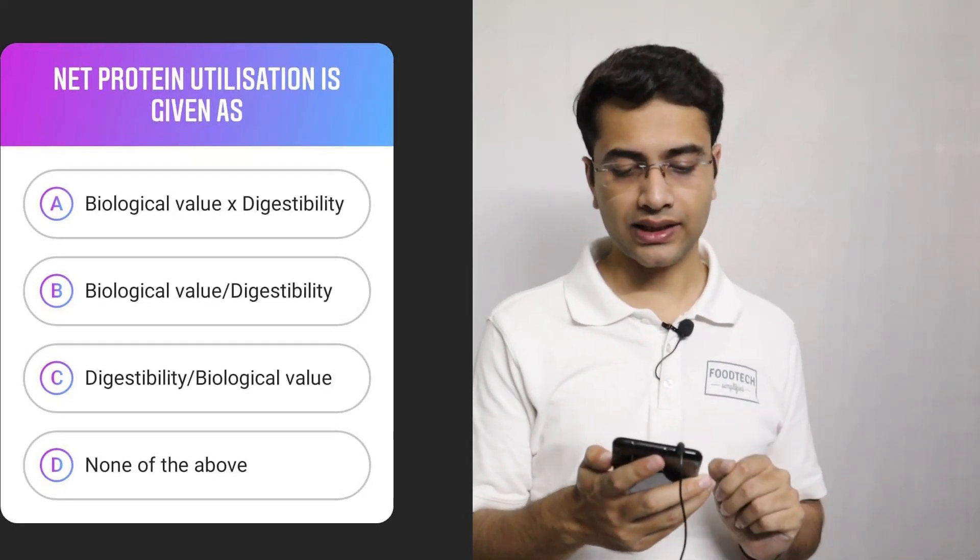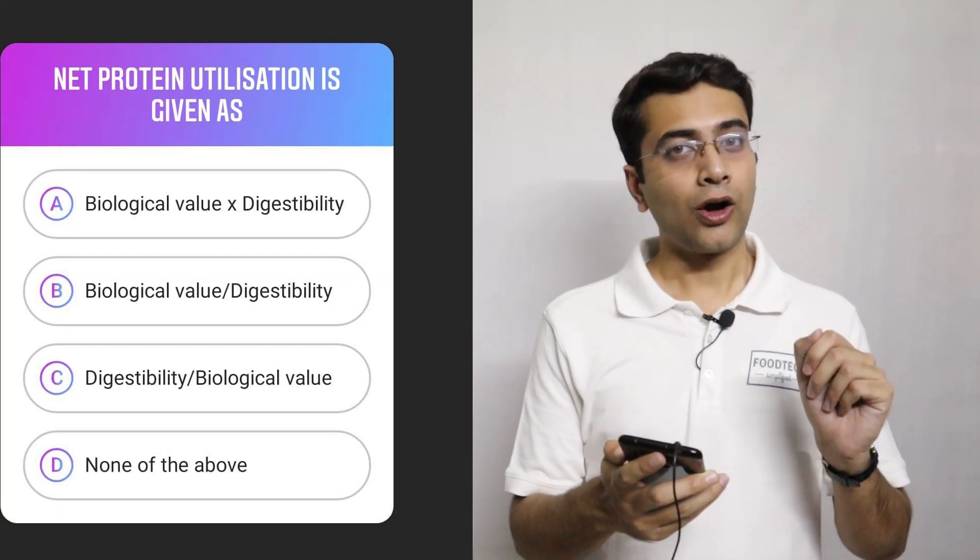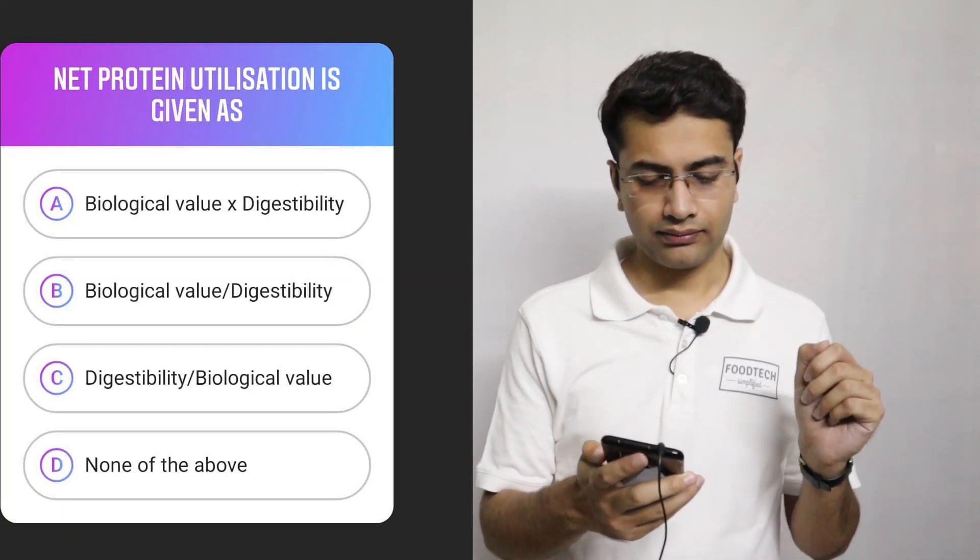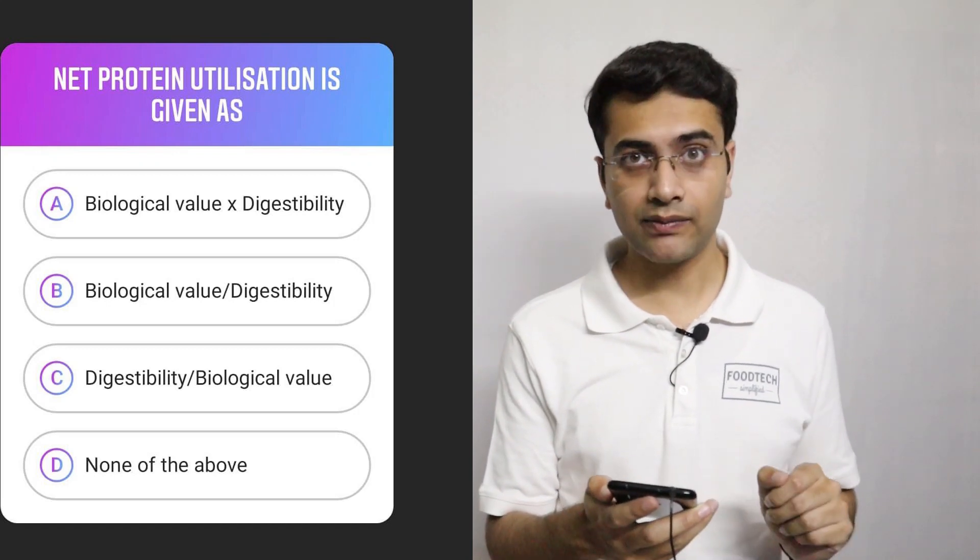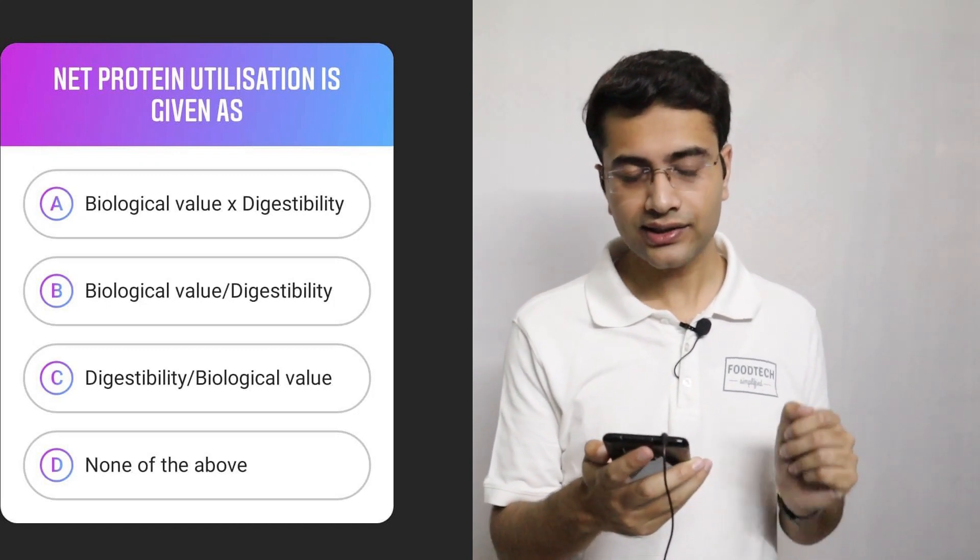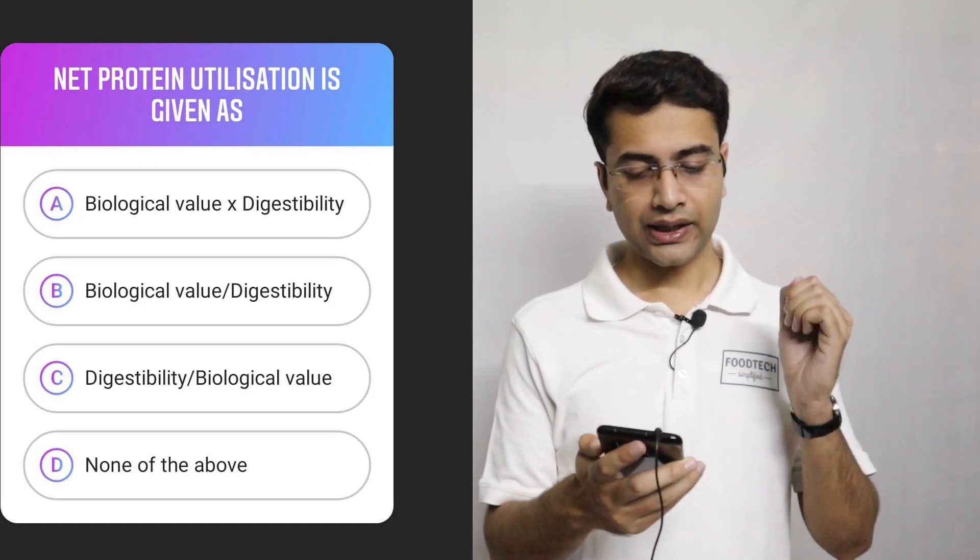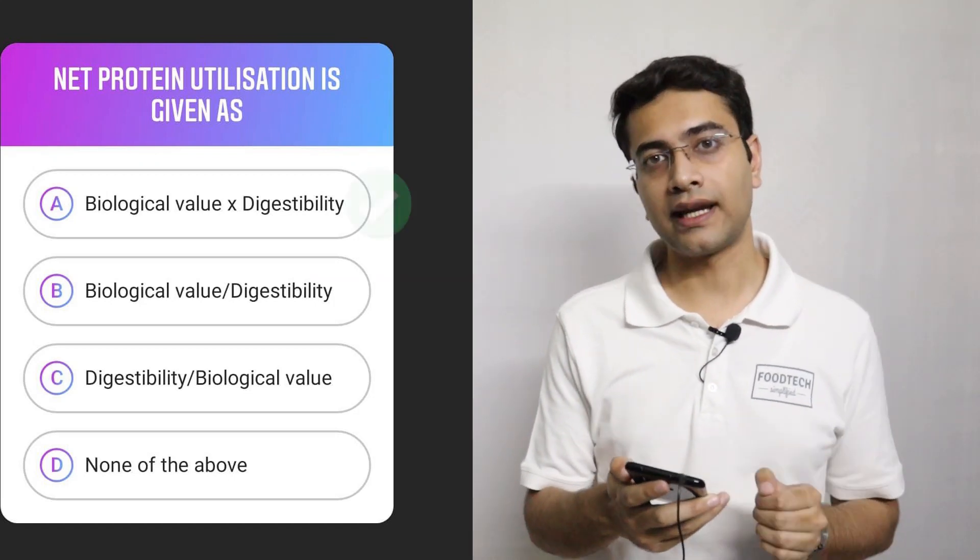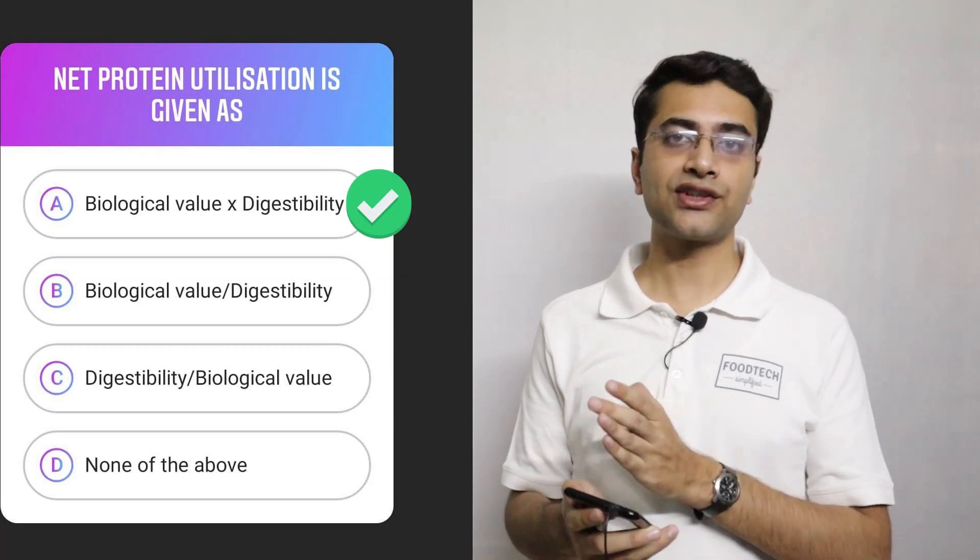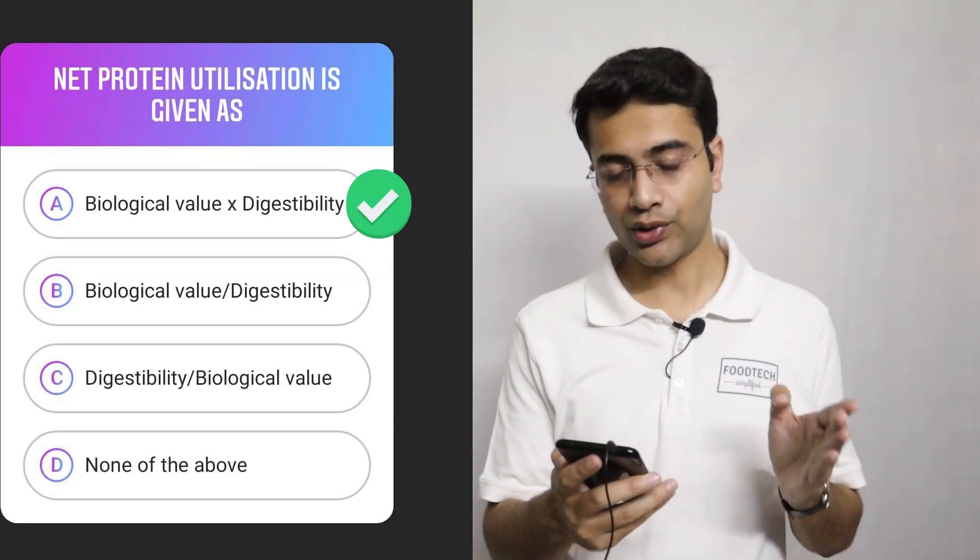Moving on to the next one. Net protein utilization is given as option A biological value multiplied by digestibility, option B biological value divided by digestibility, option C digestibility divided by biological value, and option D none of the above. So the correct answer is option A, biological value multiplied by digestibility will give you net protein utilization.